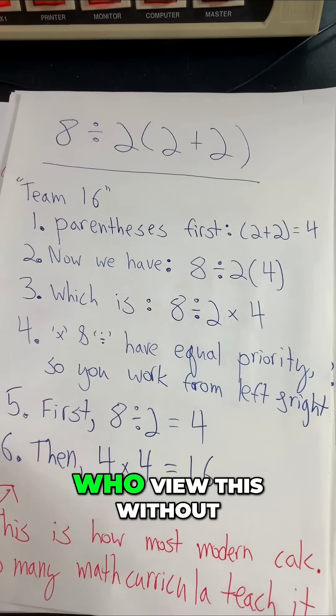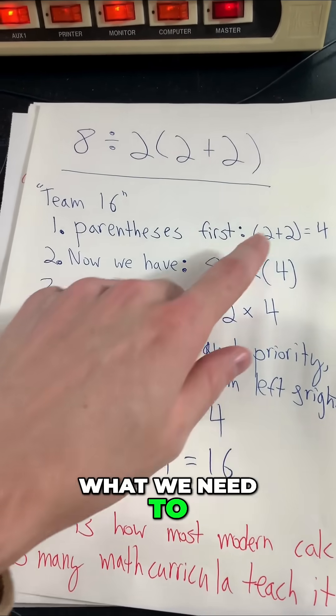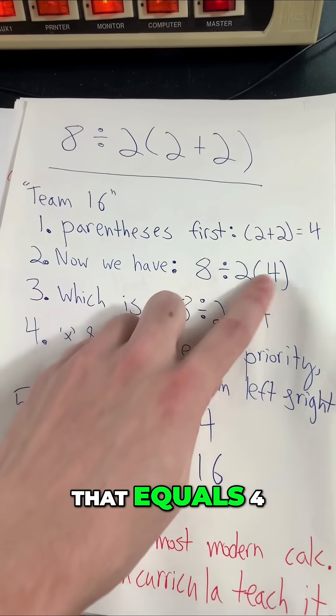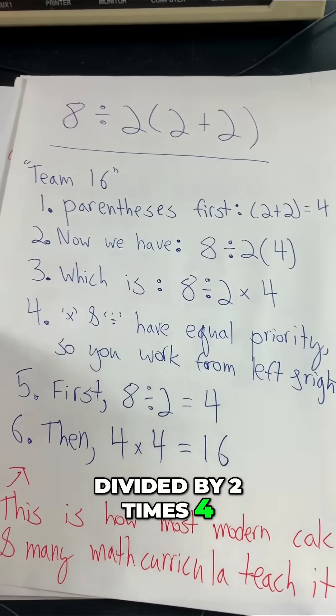There are people who view this without the additional parentheses or division bar, and they say what we need to do is 2 plus 2 first, that equals 4. And then we'll do 8 divided by 2 times 4, which is just 8 divided by 2 times 4.